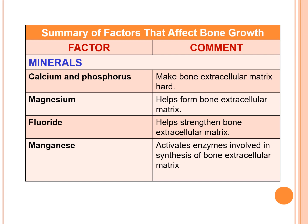First of all, let us discuss about minerals. Calcium and phosphate make the bone's extracellular matrix hard, and magnesium helps to form the bone's extracellular matrix. Fluoride ion helps strengthen the bone's extracellular matrix. Coming to manganese, it activates the enzymes involved in the synthesis of bone extracellular matrix.